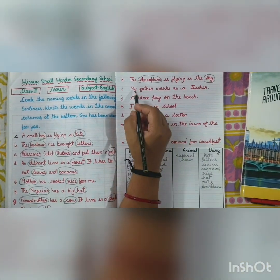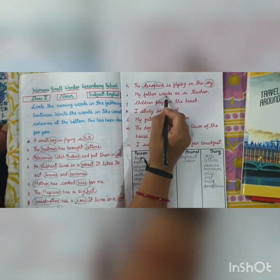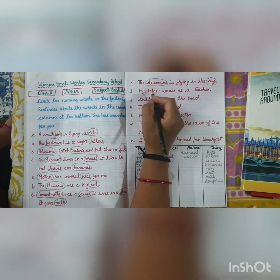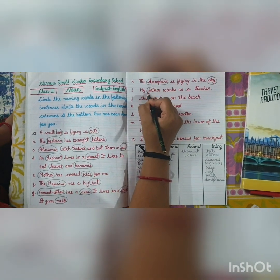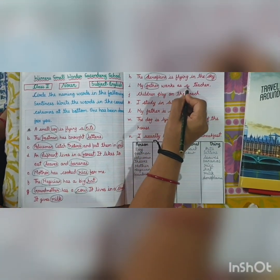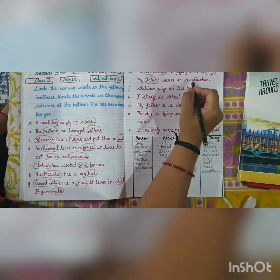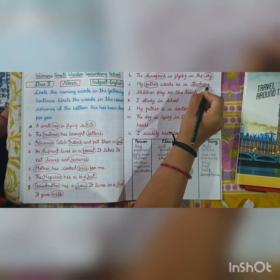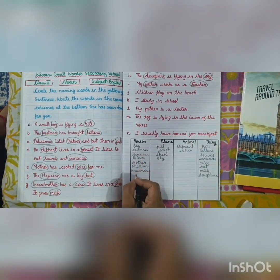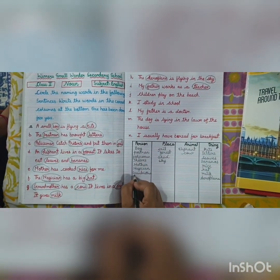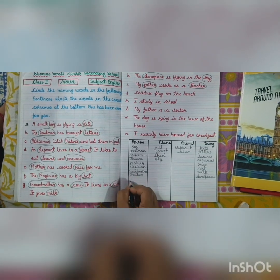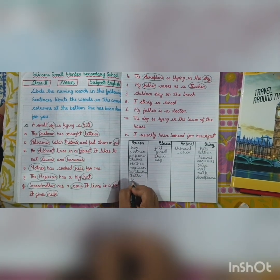Next: My father works as a teacher. Father is a person, and teacher is also a person. So we write both father and teacher in the persons column.